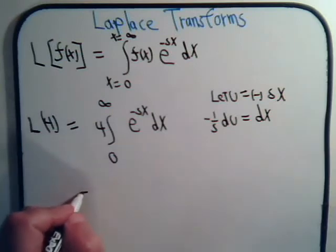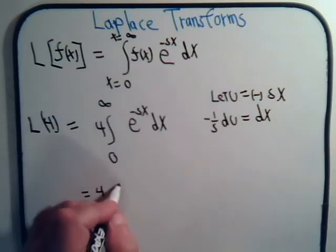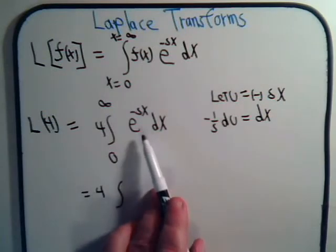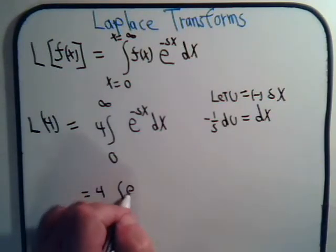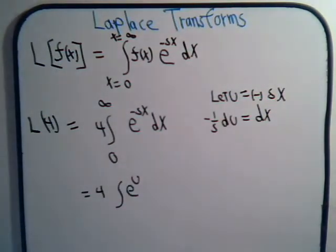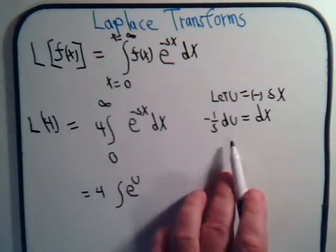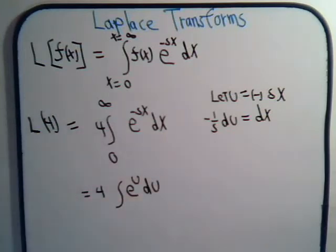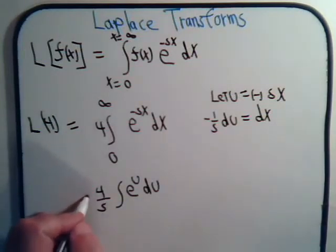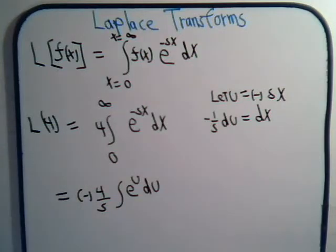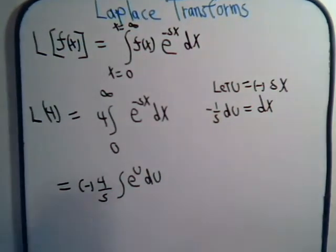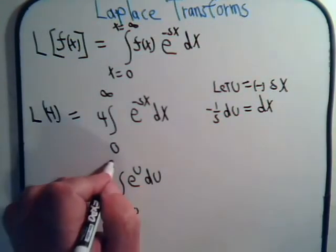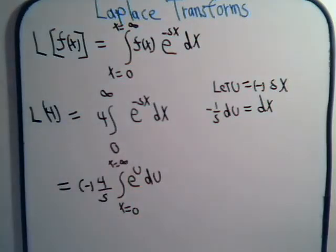Going back to the integral, this equals 4. Instead of e to the minus sx, we get e to the u. And instead of dx, we substitute. With the minus sign, x still goes from 0 to infinity.